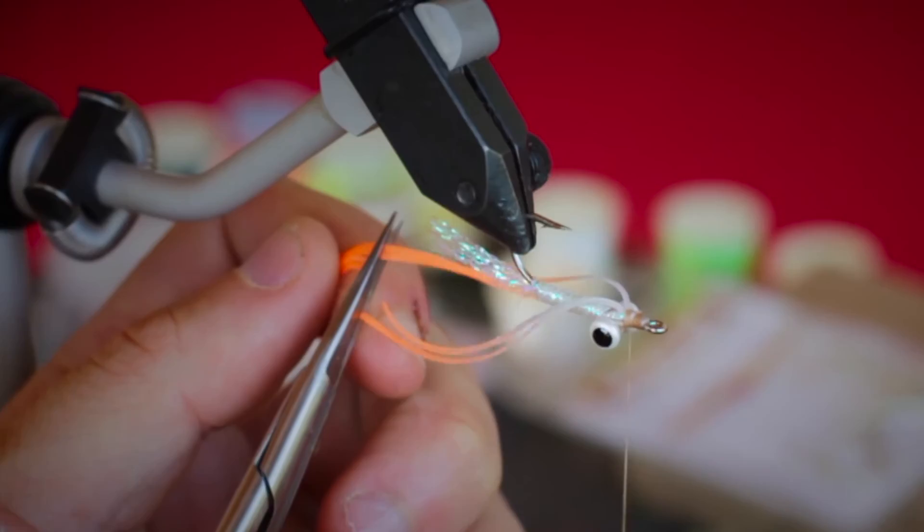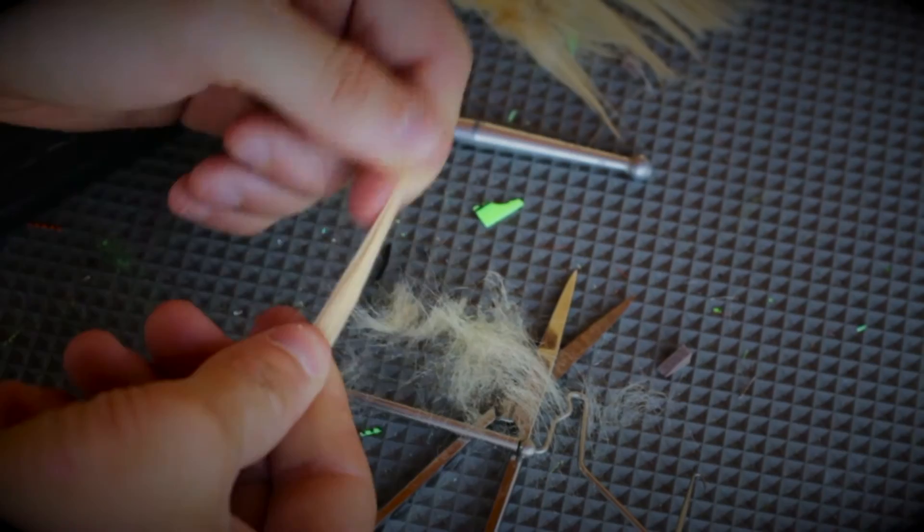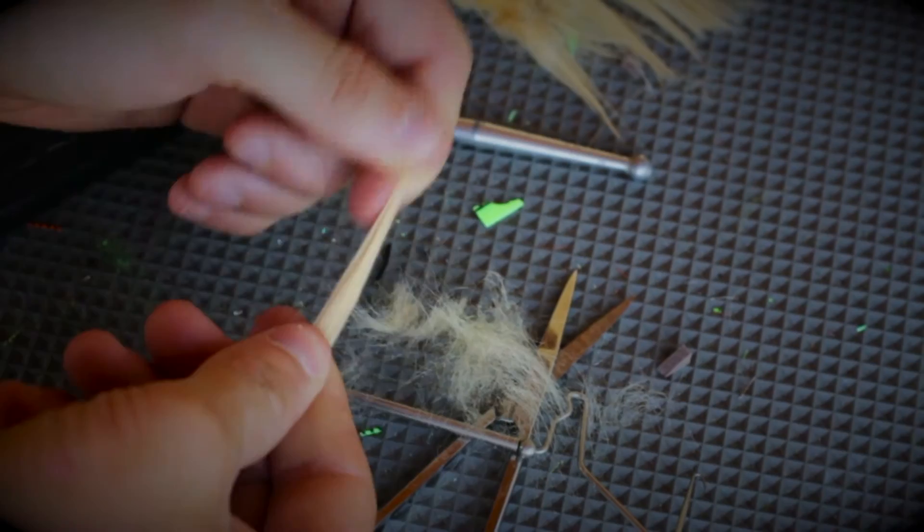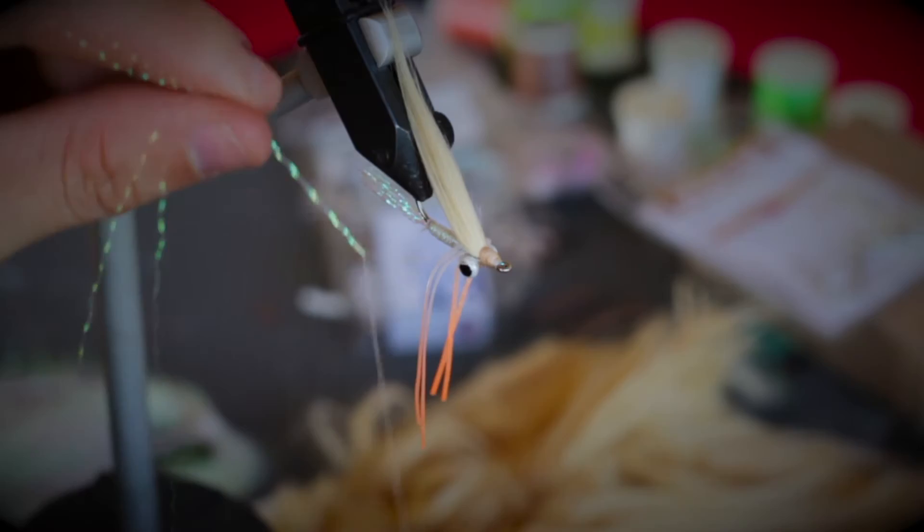Then we're going to take a pinch of pseudo hair, trim it off, clean out some of the fibers, and go ahead and tie it in right up in front of the eyes as well. Once that's secure we'll take a few strands of crystal flash and attach that up on top of the pseudo hair.